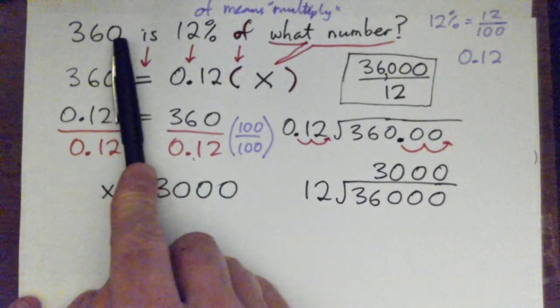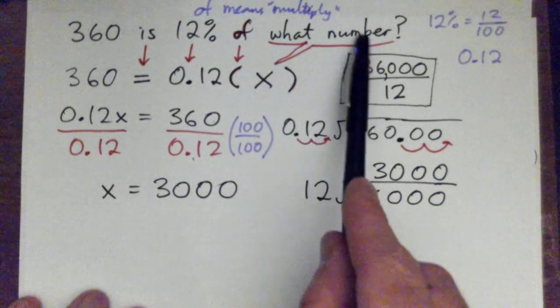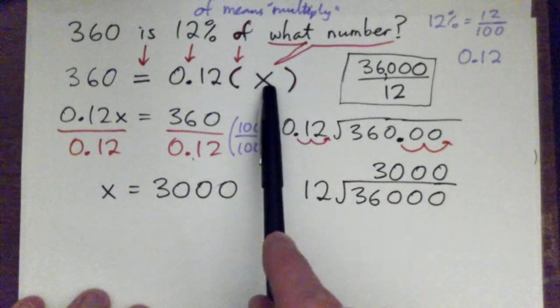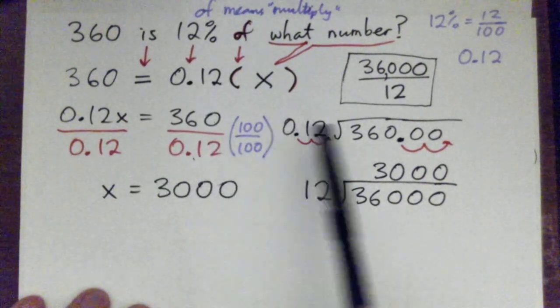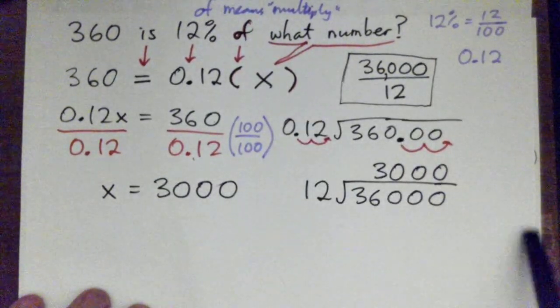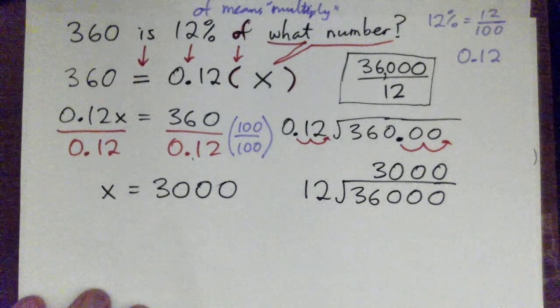So the question was 360 is 12% of what number. And we, in place of 'what number', we put X. We set up this equation, we solved it, we divided by a decimal - lots to learn in this question - and we found X is 3,000. Now let's check that.